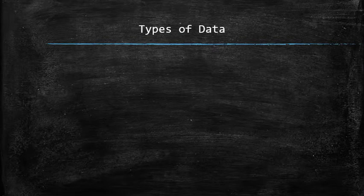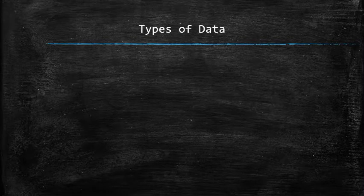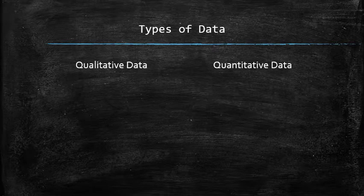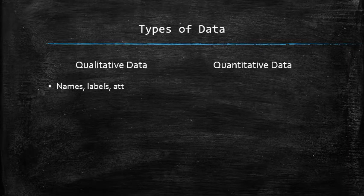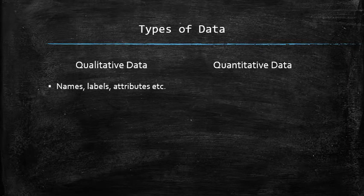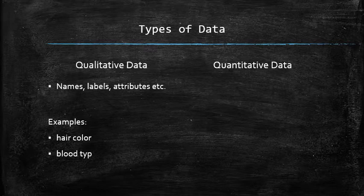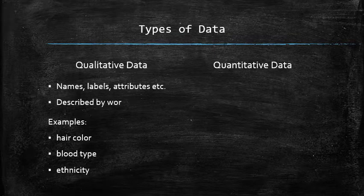Most variables and data can be put into the following categories: qualitative and quantitative. Qualitative data consists of names and labels describing the attributes of a population such as hair color, blood type, ethnic group, the car a person drives, or the street that a person lives on. Qualitative data are generally described by words or letters.